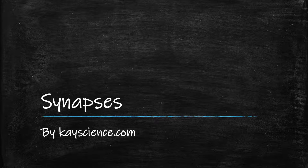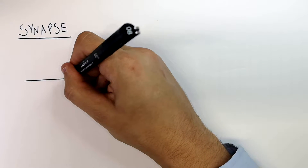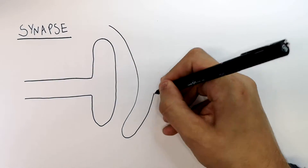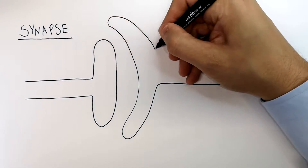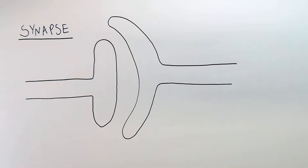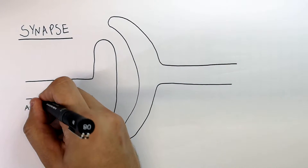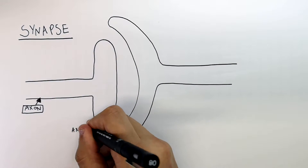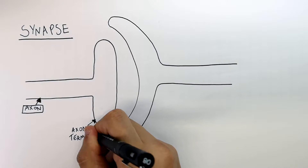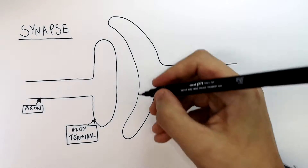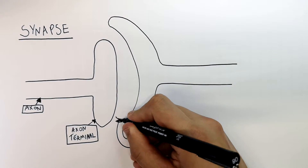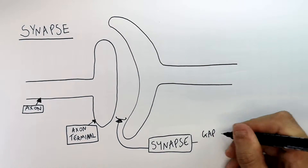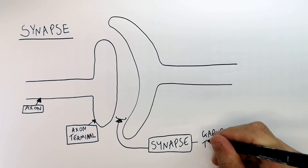The Synapse by KScience.com. This here is one neuron, and it meets another neuron with a gap in between them. The gap is what we're going to learn about today. This here is the axon of one neuron and the axon terminal. The axon terminal is the end point of a neuron, and now it gets to the synapse. This gap here is called a synapse — a gap between two neurons.